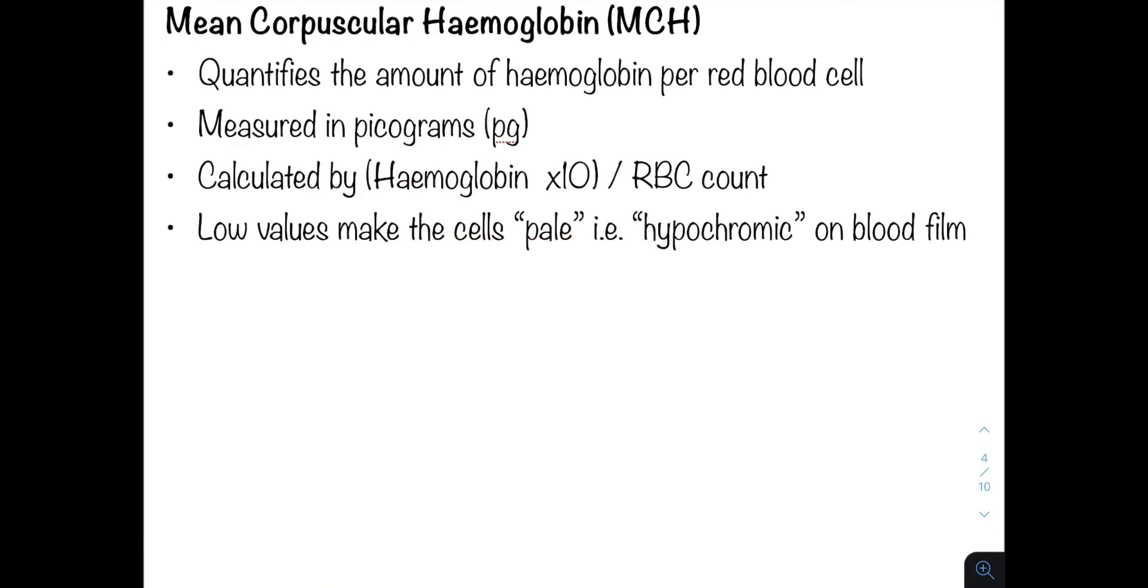Now the mean corpuscular hemoglobin or the MCH quantifies the amount of hemoglobin per red blood cell. So this is important as well. It is the amount of hemoglobin in each individual cell. It is measured in picograms and calculated by dividing the hemoglobin by the red cell count.